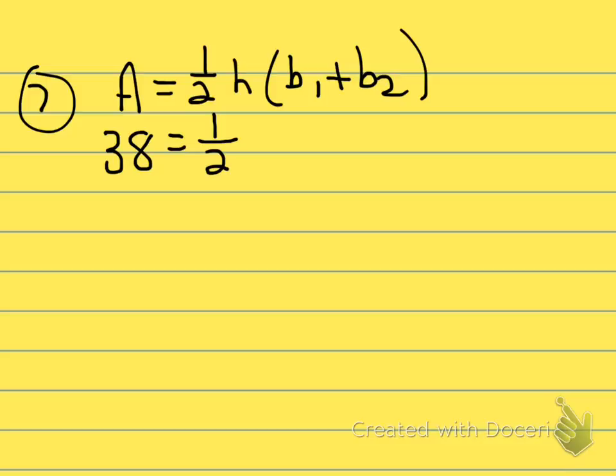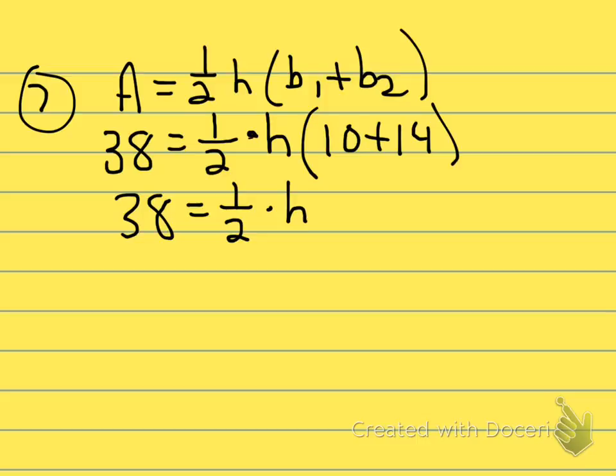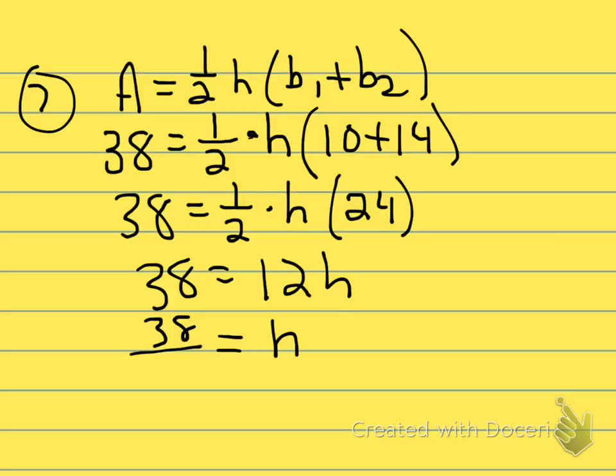That's equal to a half of the height. The height is what we're trying to find, so we'll just leave the variable H in there, times the bases added, and we know the bases are 10 and 14, so 10 plus 14. That's 38 equals one half of H times 10 plus 14 would be 24. So 38 equals a half of 24 or a half times 24 is 12H. So if I divide by 12, H will be 38 over 12.